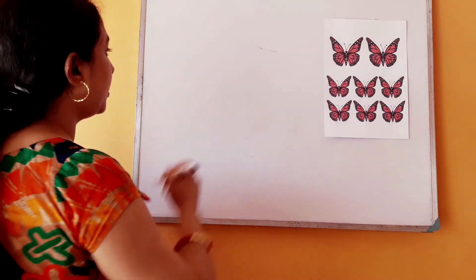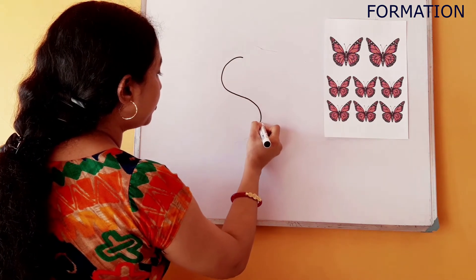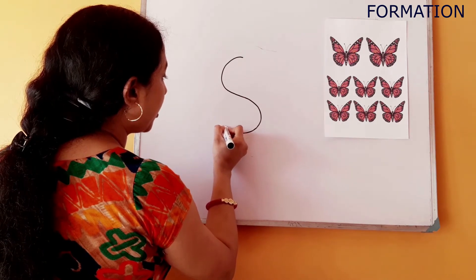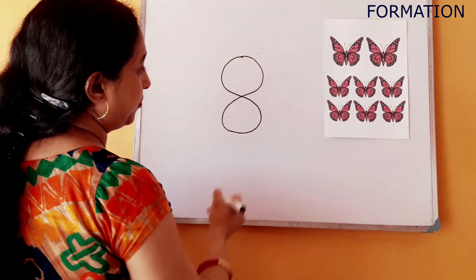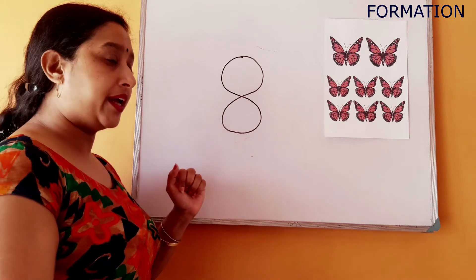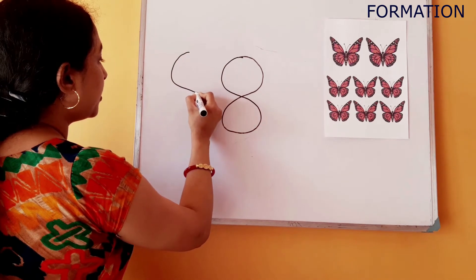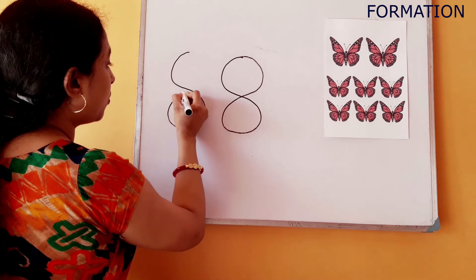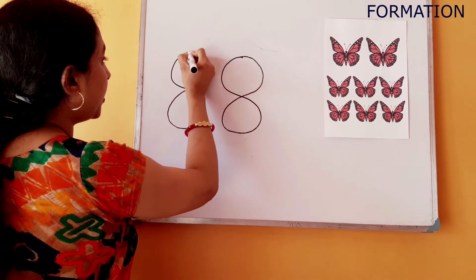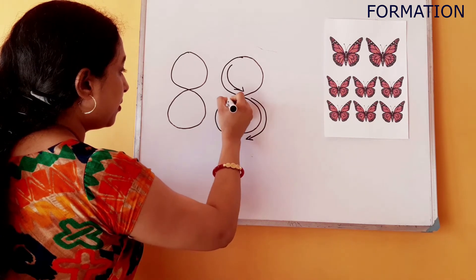Now it's time to write number eight. Everyone look at the board. Start from top, then draw a C curve, then go down, draw an opposite C curve or D curve, then turn, then go up, draw one more curve and touch here. This is how we write number eight.